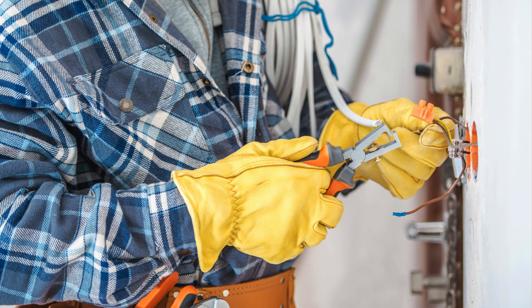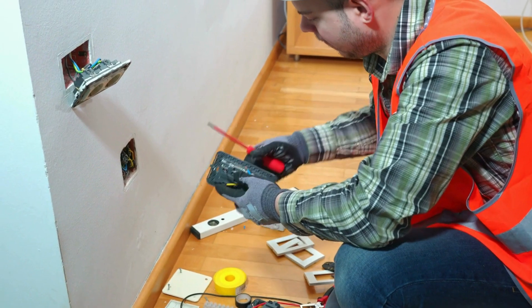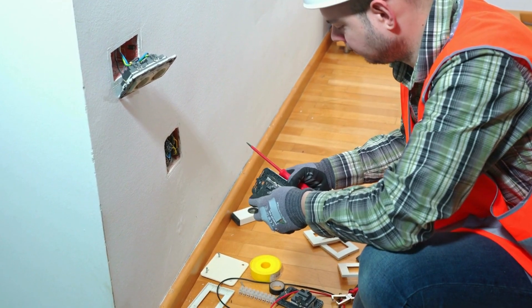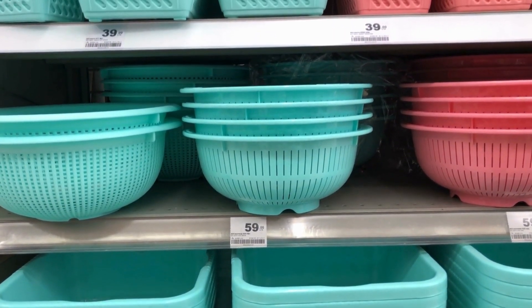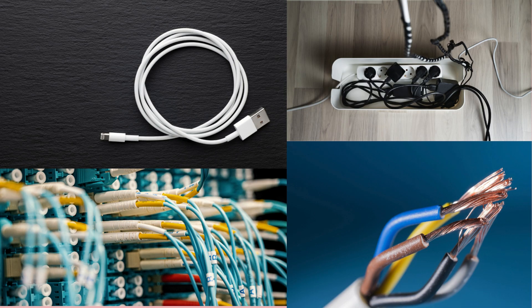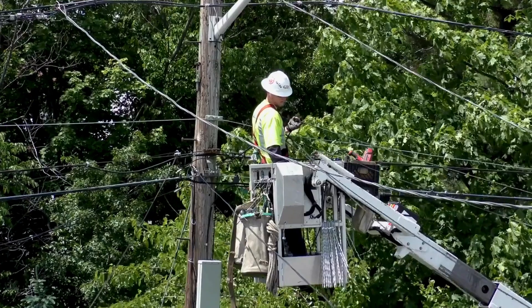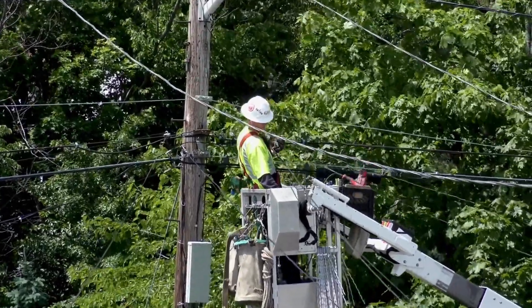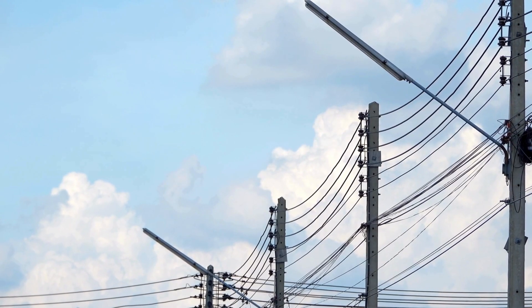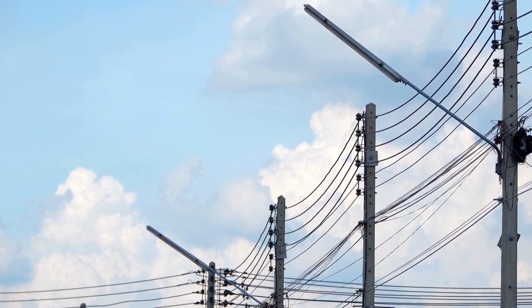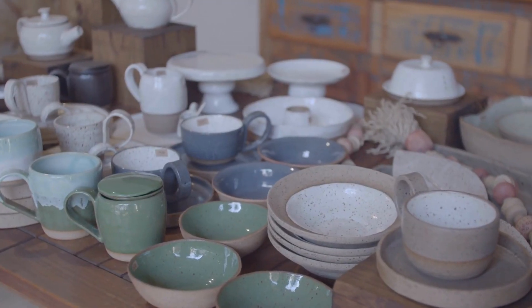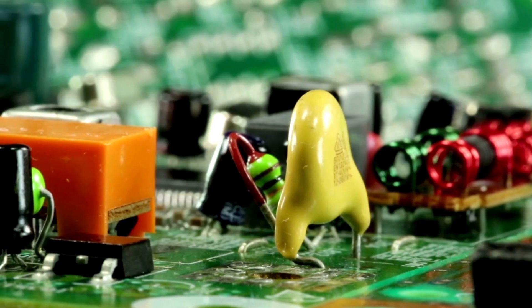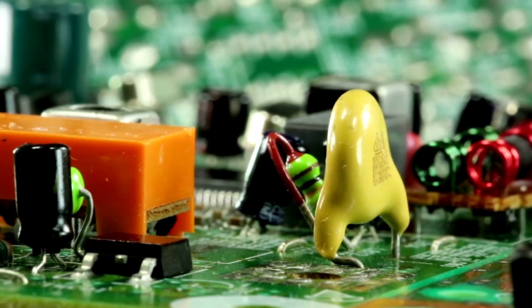Here are some examples of insulators. Rubber, often used to coat electrical wires and make gloves for electricians. Plastic, used in many household items and as an insulating layer in electronic devices. Wood does not conduct electricity and is used in many applications to prevent electrical hazards. Glass, used in windows, light bulbs, and insulators for high voltage power lines. Ceramics are often used in electrical insulators for their high resistance to heat and electricity.